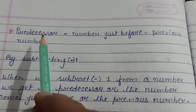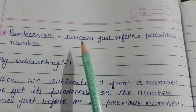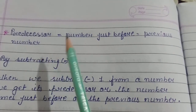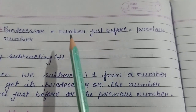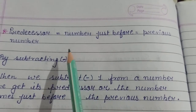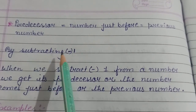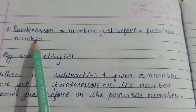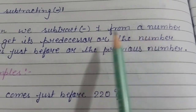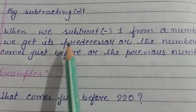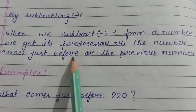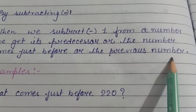Now predecessor. Predecessor, number just before, and previous number are the same. Only names are different but the result which we get is the same. By subtracting 1 we get the result. When we subtract 1 from a number we get its predecessor, or the number that comes just before, or the previous number.